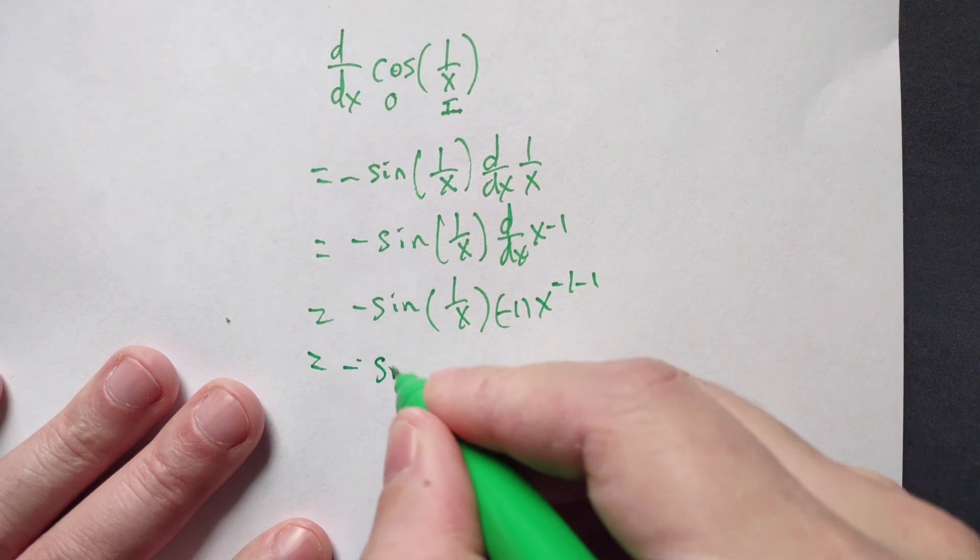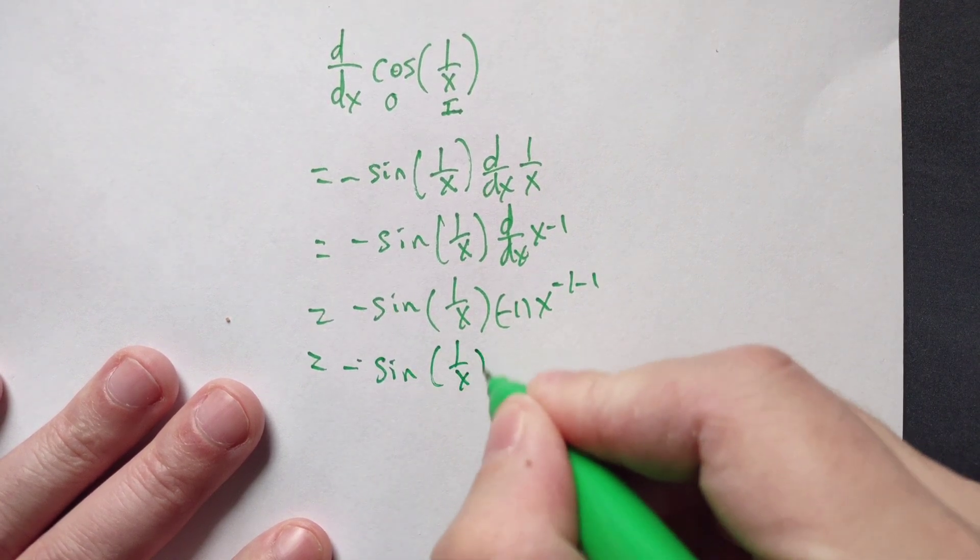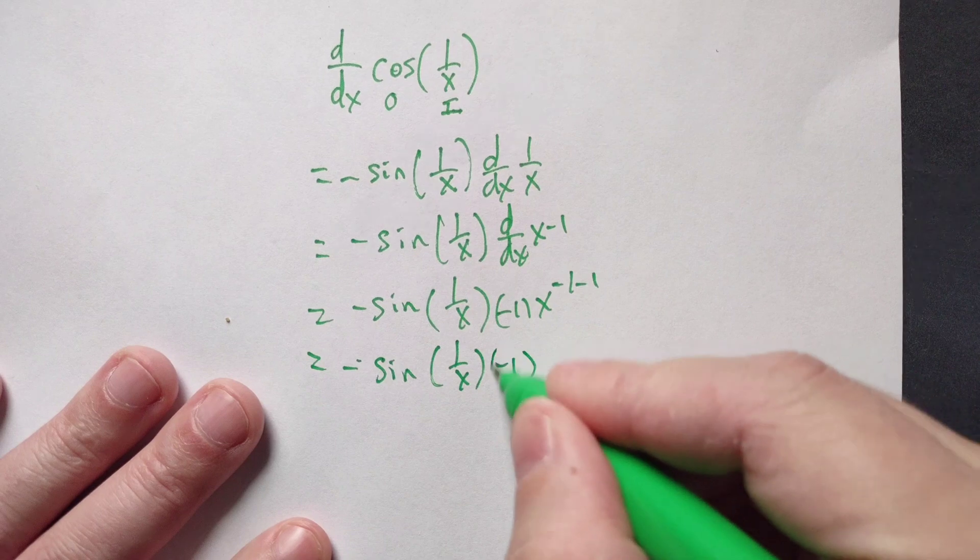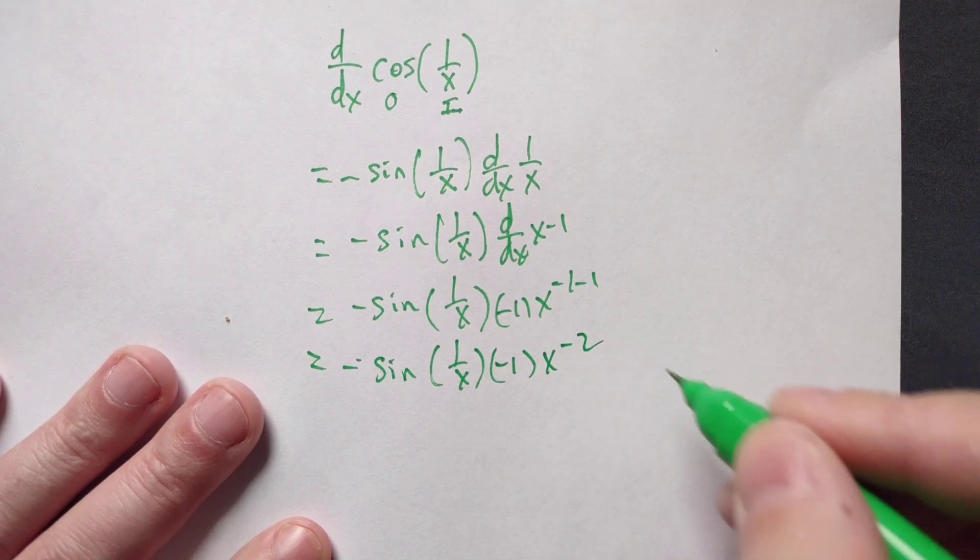Then you simplify, so negative sine of 1 over x, and then this is negative 1, this becomes x to the negative second.